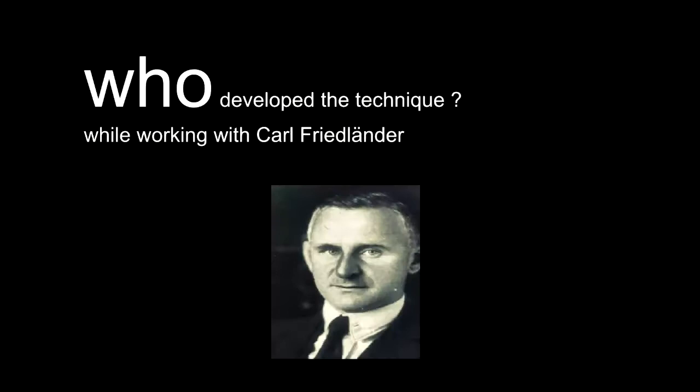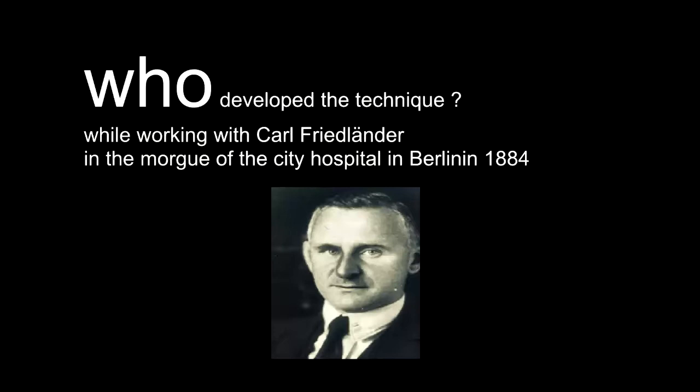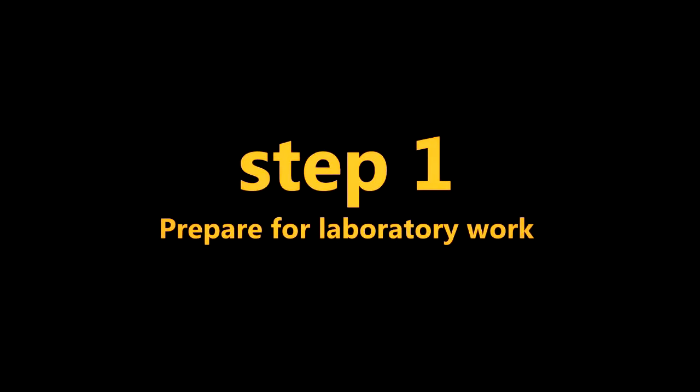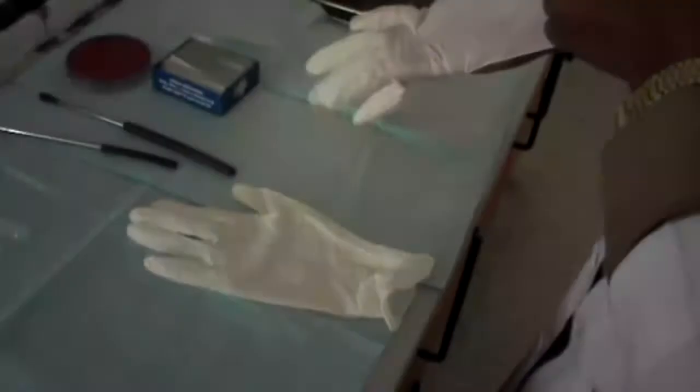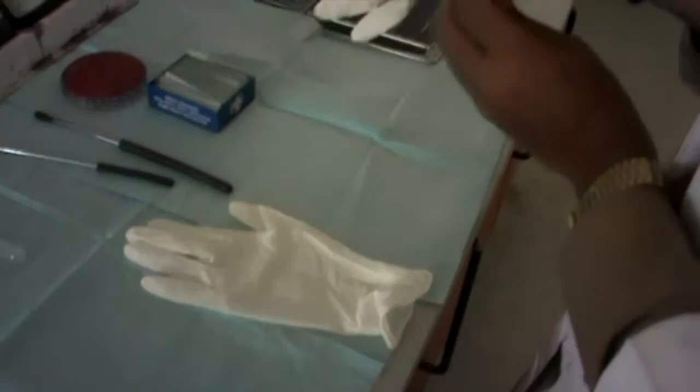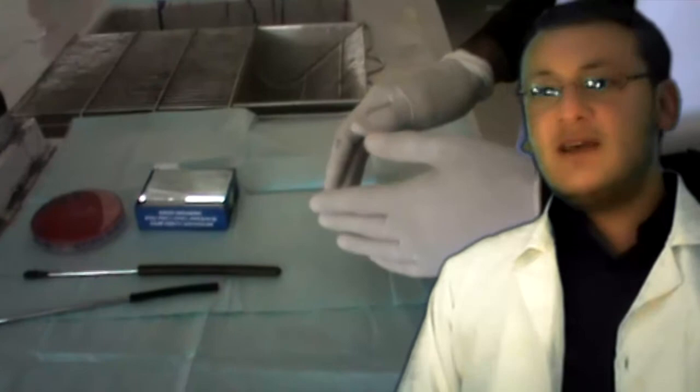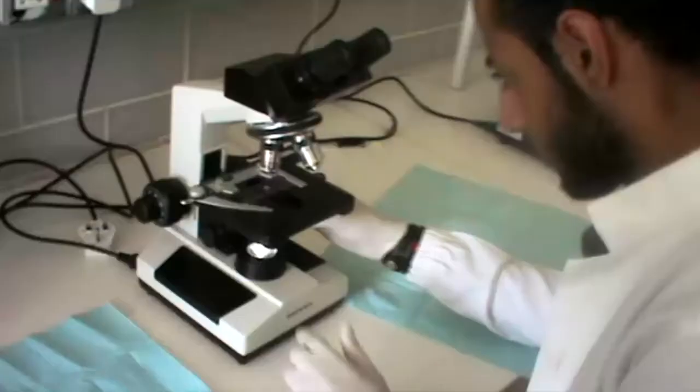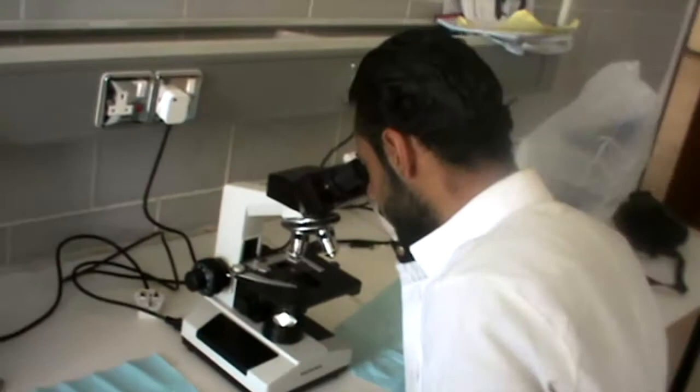Part one of three: preparing the slide. Step one, part one — prepare for the laboratory work. Put on gloves to prevent contaminating the bacteria sample you will be testing. Disinfect the work space, and check that the Bunsen burner and the microscope are functional before you begin. Step one, part two — add the sample to the slide.